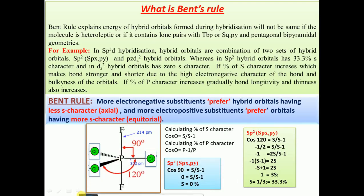For today's session we are going to discuss the Bent rule. Bent's rule explains that the energy of hybrid orbitals formed during hybridization will not be the same if the molecule is heteroleptic, or if it contains lone pairs with trigonal bipyramidal, square pyramidal, or pentagonal bipyramidal geometry. Usually in hybridization, hybrid orbitals have similar energy, but there are exceptions where two different energy hybrid orbitals are observed.